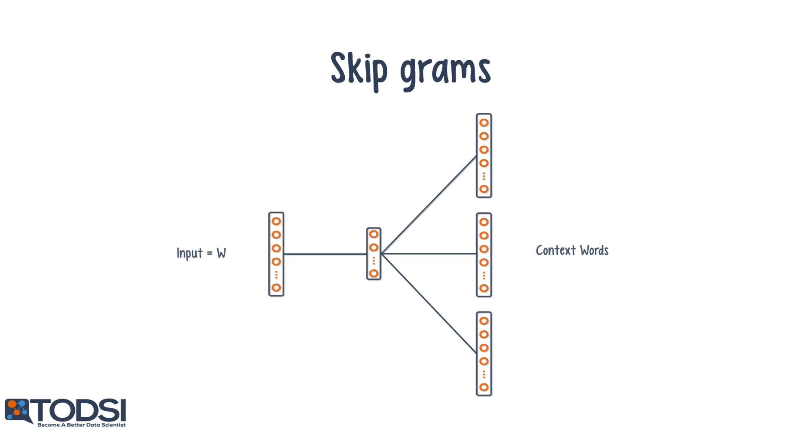The skip-gram model is the reverse of the continuous bag of words model, since it allows you to estimate the context words given a target word. Since only the target is used as input, rather than a set of context words, the input to the hidden layer will be much smaller.